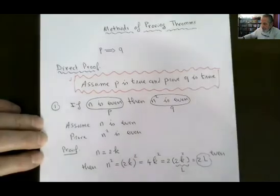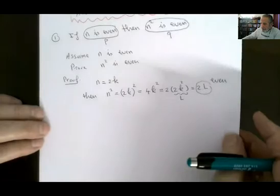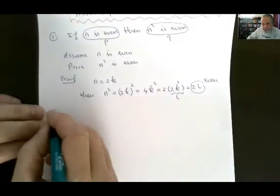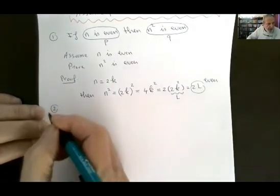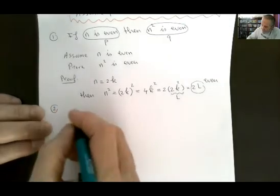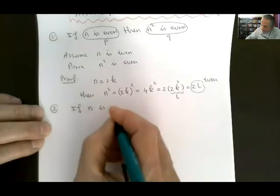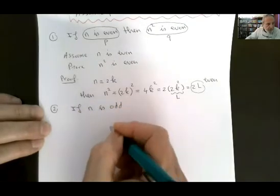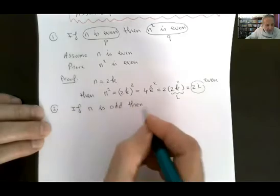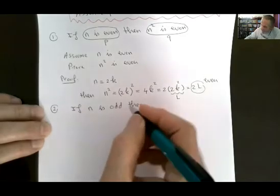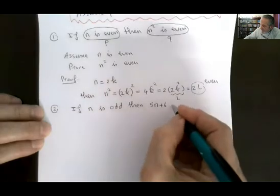Now example number two: if n is odd, then 5n plus 6 is odd.